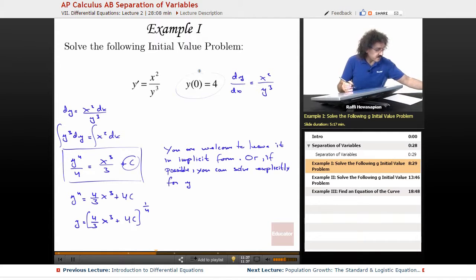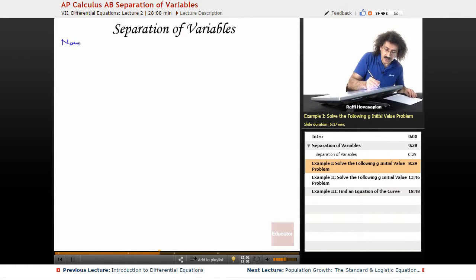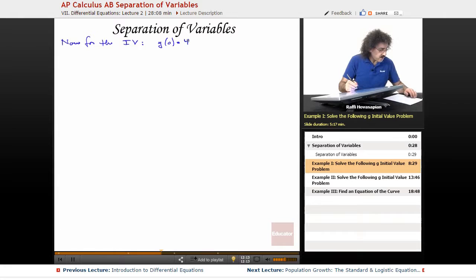So y of zero equals, y of zero equals four. So y of zero equals four or y of zero equals two? Well, it doesn't matter. So let's see. I think on my paper I have a different value, but it doesn't really matter. So now for the initial value. So y of zero is equal to four.